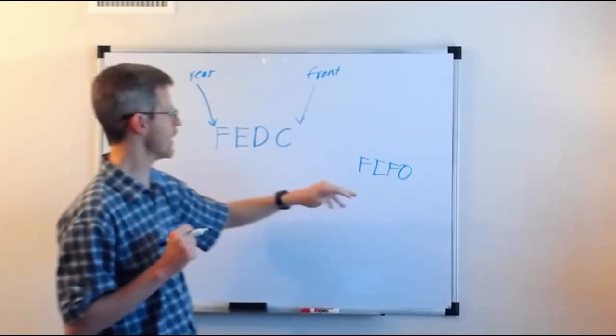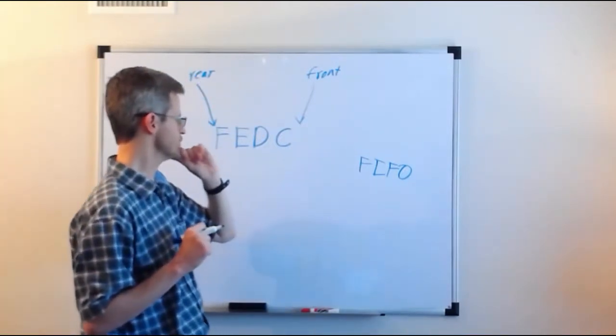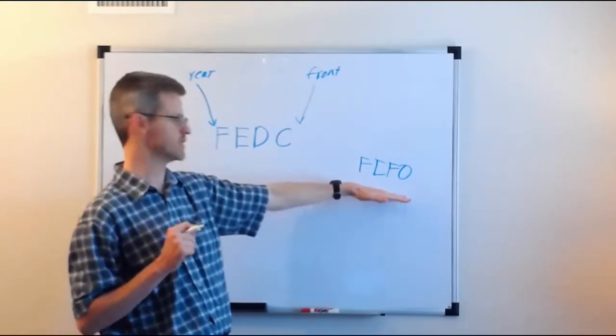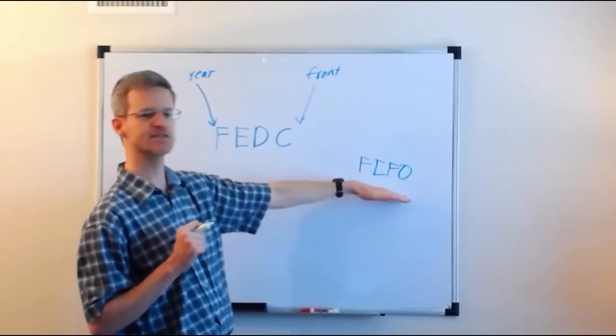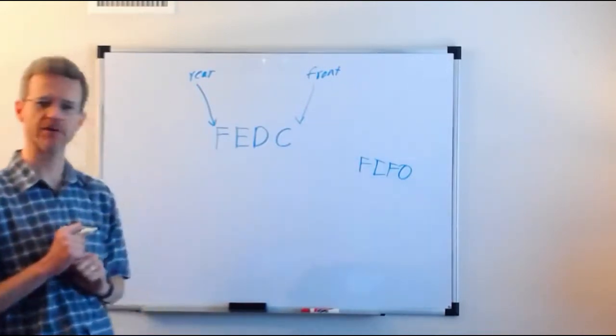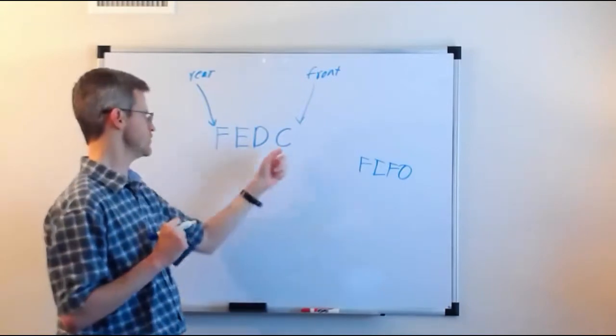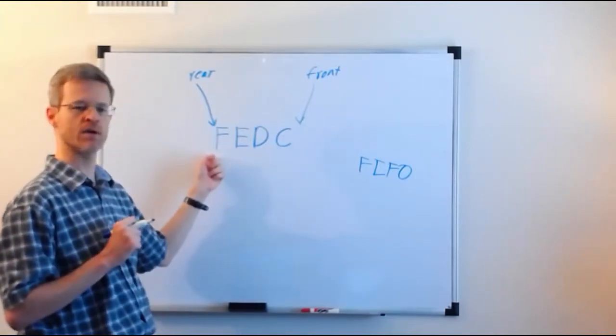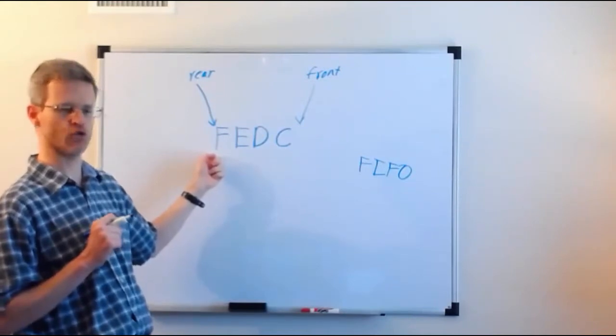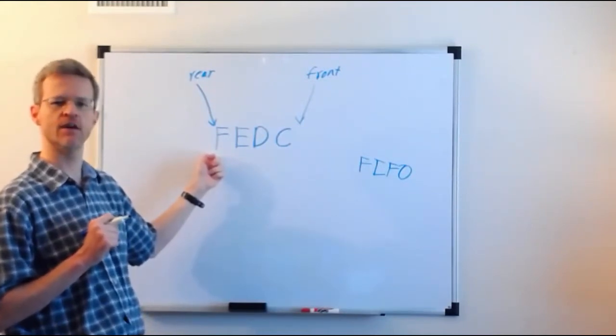So queues are data structures or queues are ADTs that provide only for FIFO operation. The first object put in is the first object to come out. And after that, the second object that was put in is the second object to come out, and so on. So queues keep things in order as opposed to a stack, which we could say reverses the order because a stack is last in, first out.